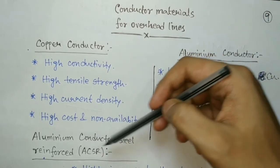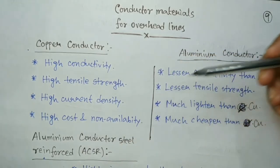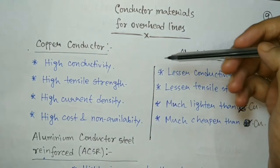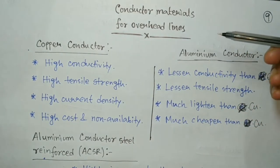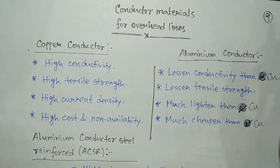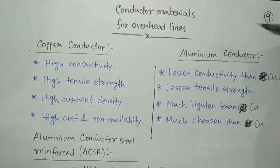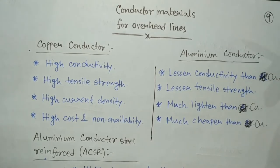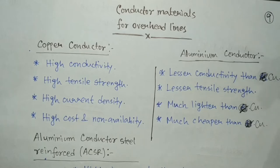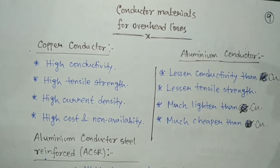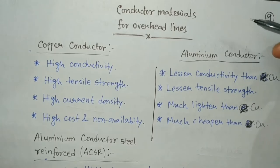Before going into detail, let's discuss what the ideal properties a conductor material should have. First, it should have very high conductivity. Then it should also have very high tensile strength. It should be lightweight, and it should also be cheap. So these are some ideal properties.